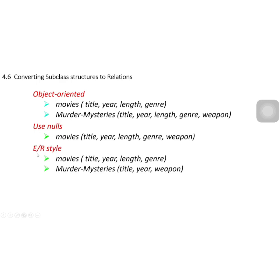The third way is the ER style. We record title, year, length, and genre for all movies including murders in the movies relation. The weapon information is listed in the murders relation. The murders relation has only three attributes: title, year, and weapon. This is how to convert subclasses to relations.